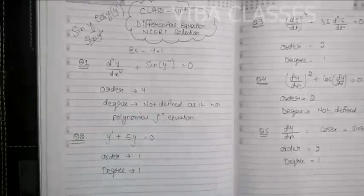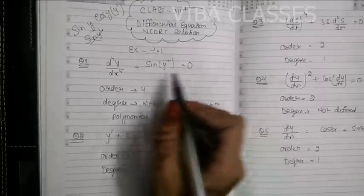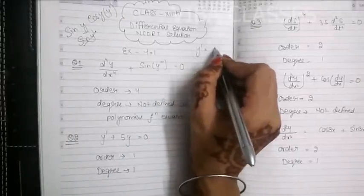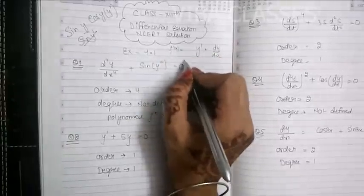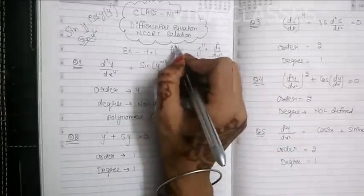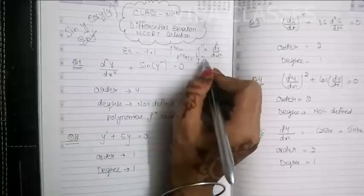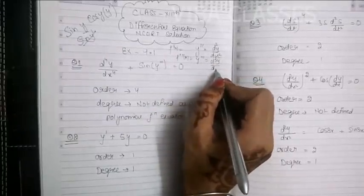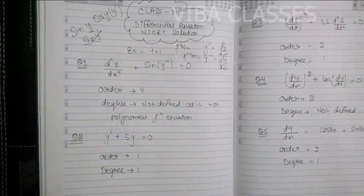In the first exercise, you will have to identify whether it is a differential equation or not. If it is, you tell the order and degree. The first derivative can be written as y', dy/dx, or f'(x). The second derivative can be written as f''(x), y'', or d²y/dx². And so on — the third derivative is f'''(x), y''', or d³y/dx³. These are the symbolic forms used.